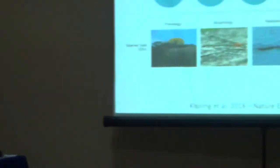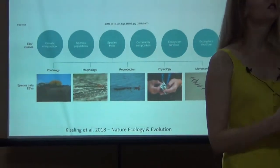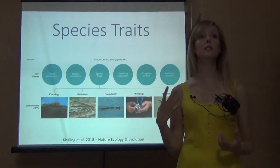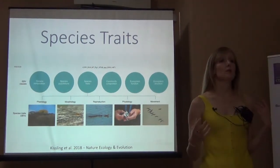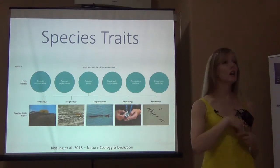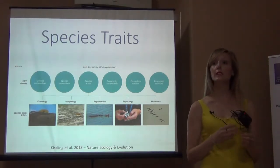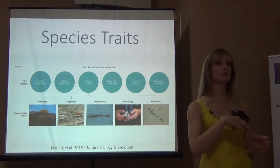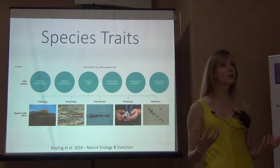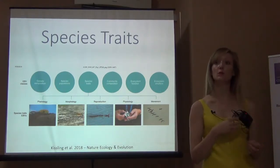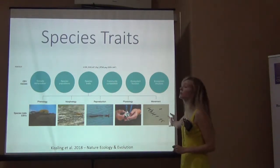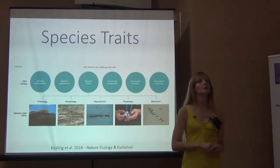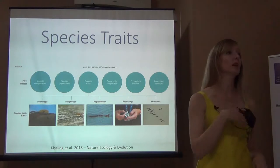Movement is fairly intuitive. How far does an individual disperse once they're born? We can also think about dispersal pathways — do they take specific routes when moving? Do they move in groups or as individuals? There are a lot of variables to consider with regard to movement, including migration and migratory pathways.